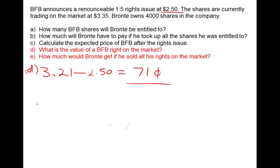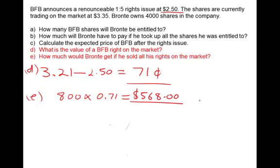How much would Bronte get if he sold his rights? Because these are renounceable rights, he can sell all 800 shares he's entitled to at 71 cents each, getting back 568 dollars — not including GST and brokerage. So you can either buy the rights and increase your portfolio, or sell the rights and get 568 dollars. Either way it's good for shareholders and great for the company because they raise the capital they need.